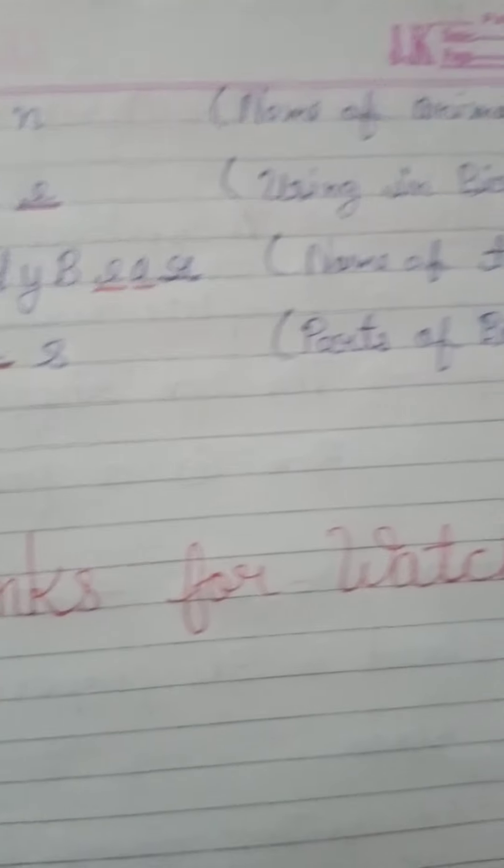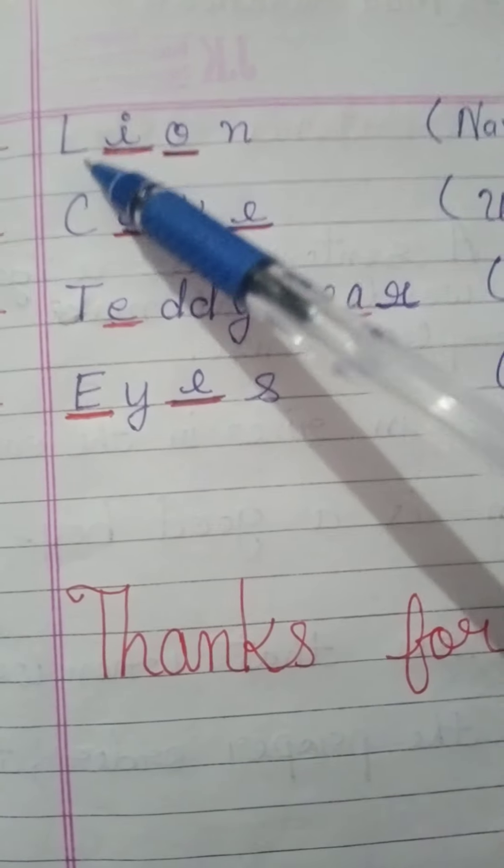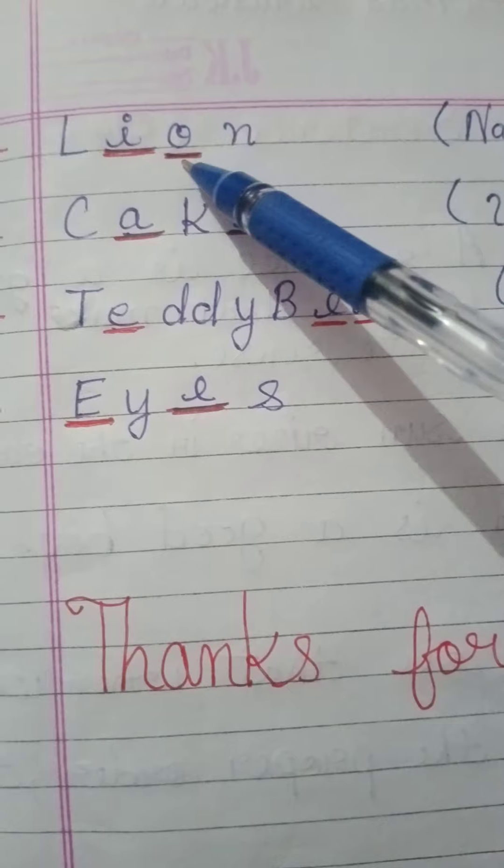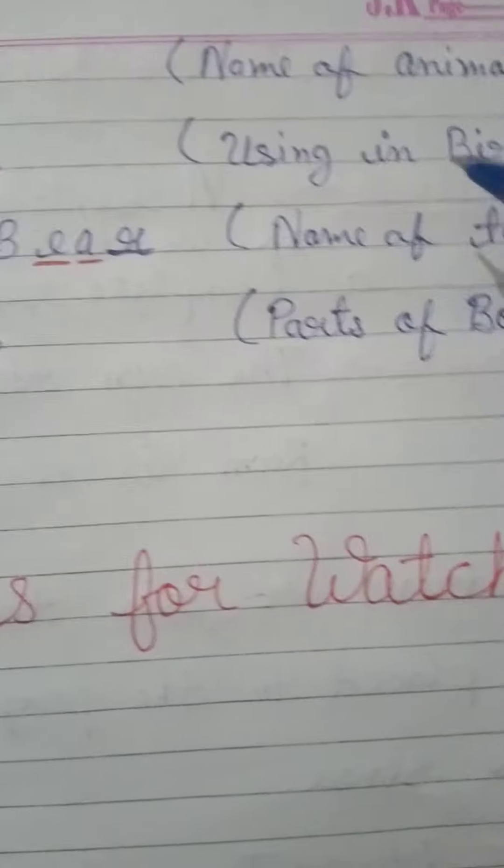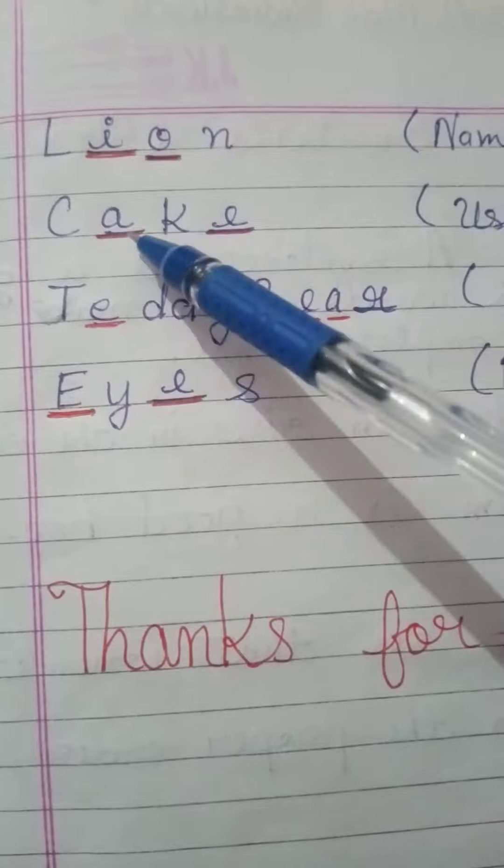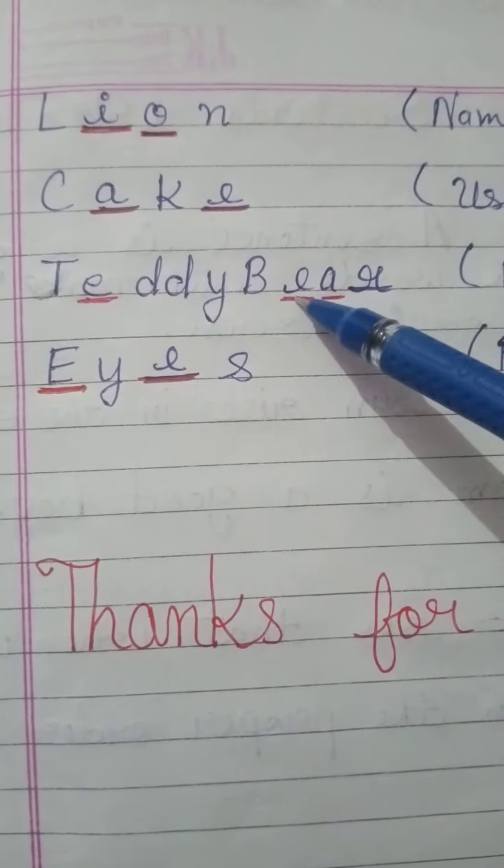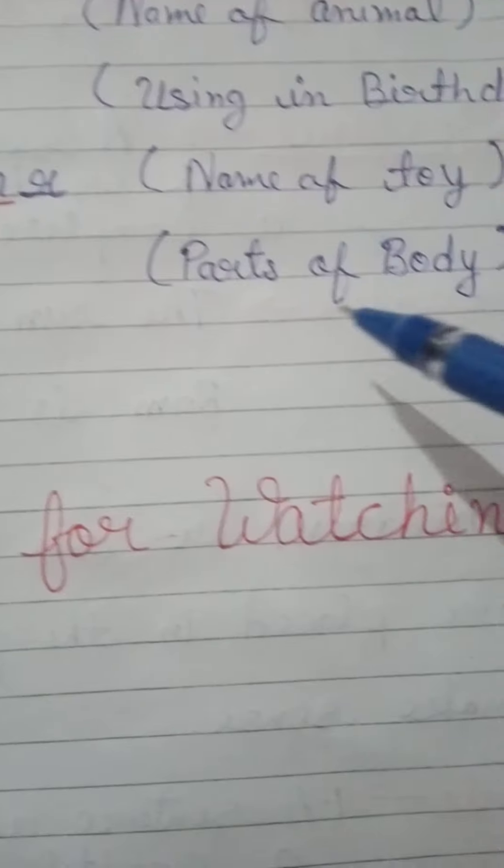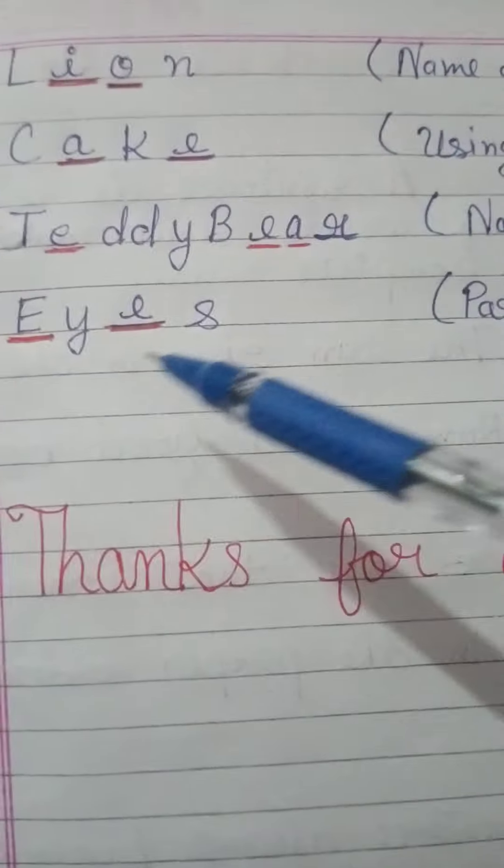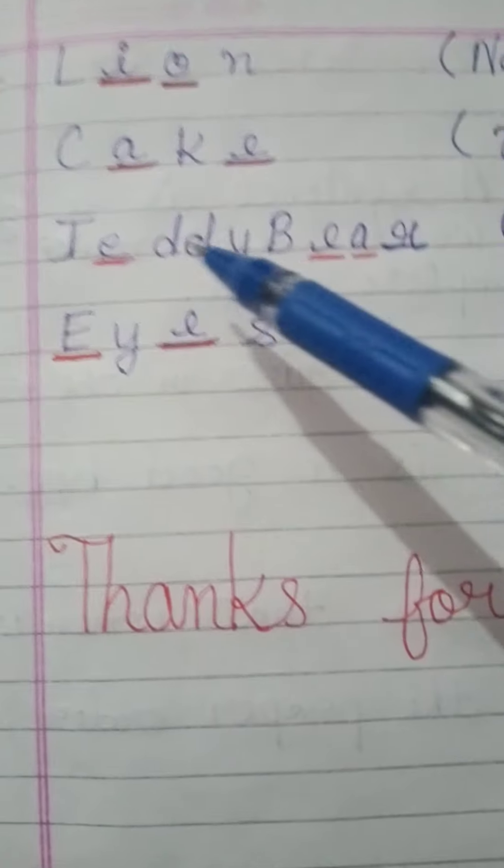Next, we have lion, name of an animal. We have filled I and O. Using in birthday, what do we use in birthday? Cake, we have filled A and E, which are vowels. Name of a toy: teddy bear. In the spelling, E, A, and A are vowels which we have filled. Parts of the body: eyes. E and then E repeat. These are vowels which I have already filled with you.